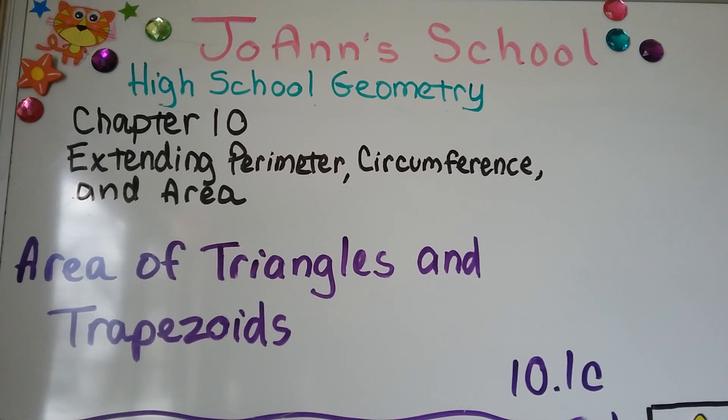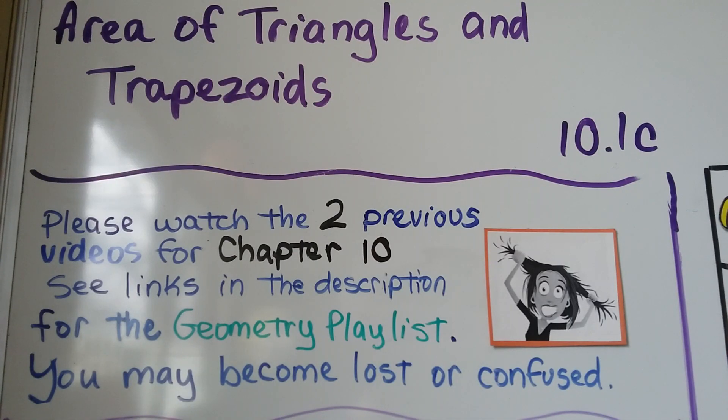Area of triangles and trapezoids, we're at 10.1c, which means we have two previous videos for chapter 10 that are linked in the description in the geometry playlist. So 10.1c means we had an a and a b, and you might become lost or confused if you didn't see them.